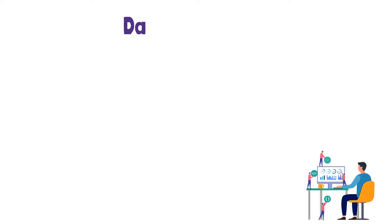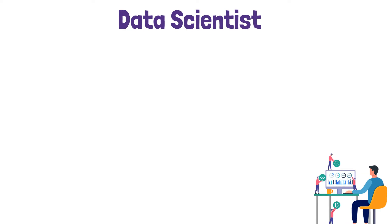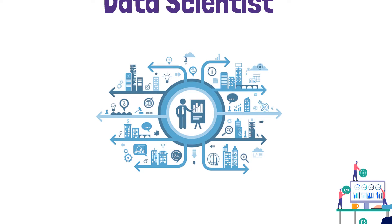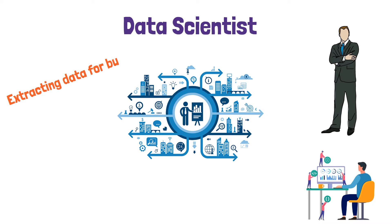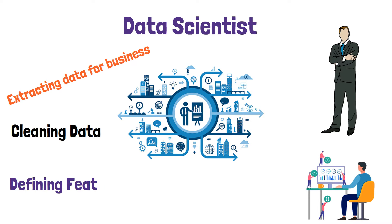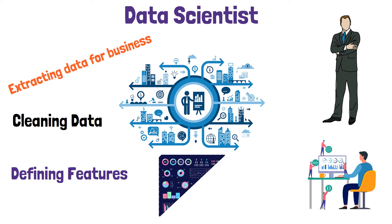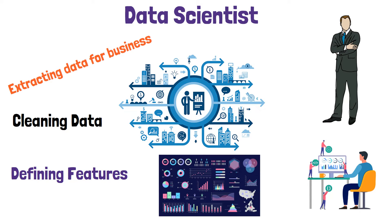Once we get the data into the proper place, then comes the data scientist, data analyst, or BI person into the picture. For ease of understanding, I'm going to use 'data scientist' for all of these roles because data science is a really broad field. The data scientist has data in the proper format and has good business understanding about what needs to be done. A data scientist is responsible for extracting data that the business needs, cleaning data for ML models, defining features required to train ML models, building dashboards or visualizations to understand data better, and preparing data for ML models.